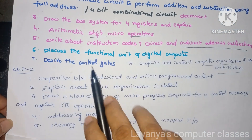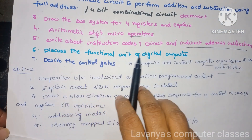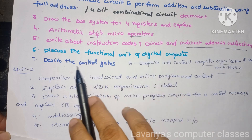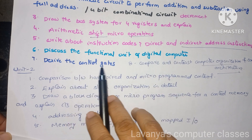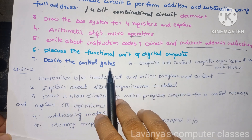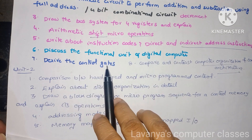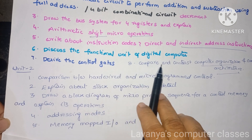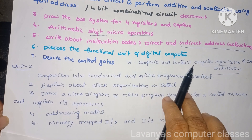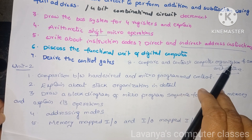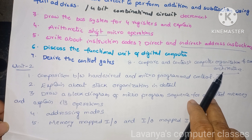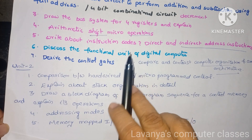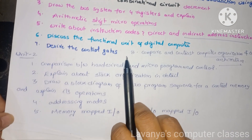Next one is: discuss the functional unit of a digital computer. Next, derive the control gates — what is a control gate and how to derive the control gates. And compare and contrast computer organization and computer architecture. These are the important questions in Unit 1.